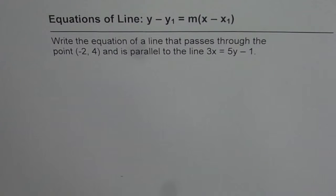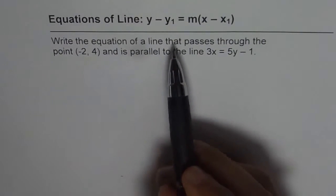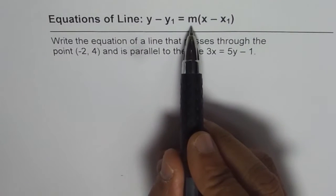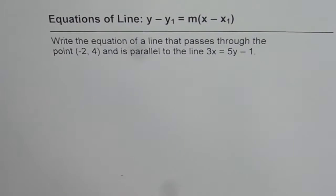I am Anil Kumar and in this video we will explore how to write equation of the line using point and slope form which is y minus y1 equals to slope m times x minus x1.